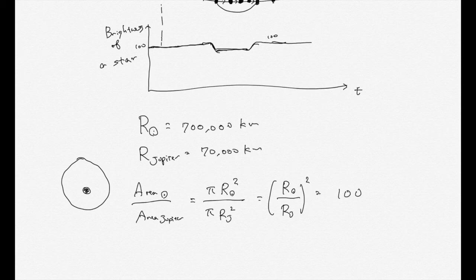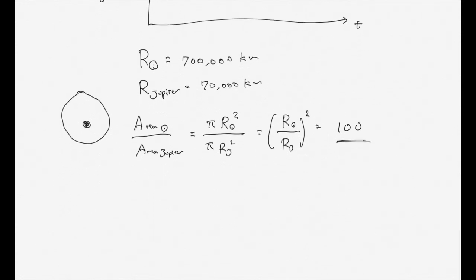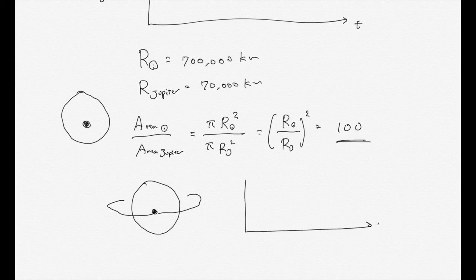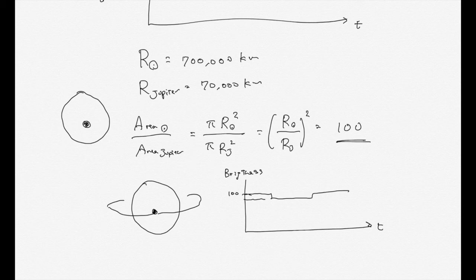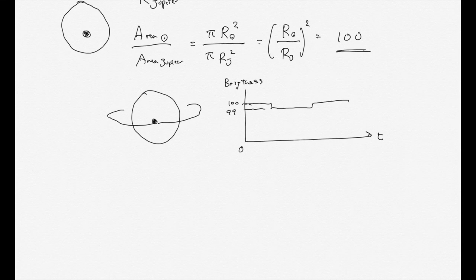So this becomes r_Sun over r_Jupiter squared, which equals 100. The ratio of the area of the Sun to the area of Jupiter is 100. So when Jupiter passes just in front of the Sun, the brightness of the Sun decreases by just one percent — it becomes 99%. This is the answer to the question.